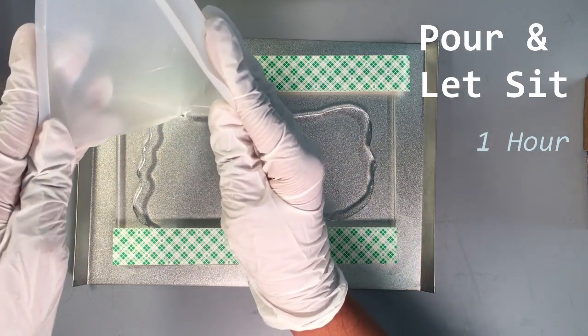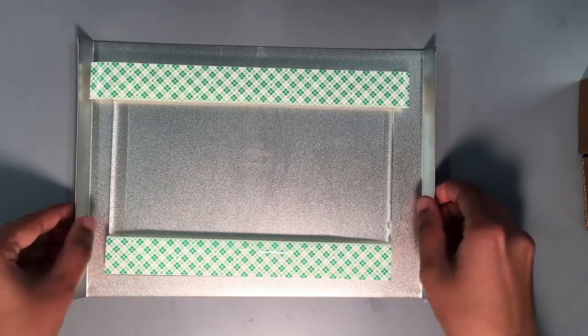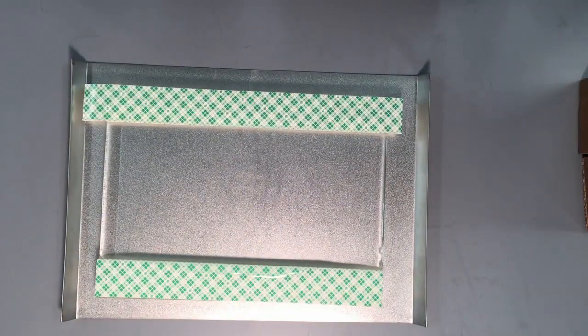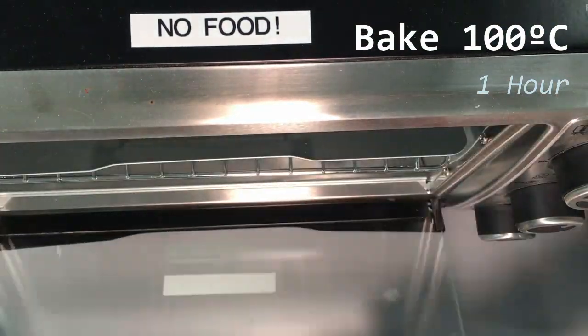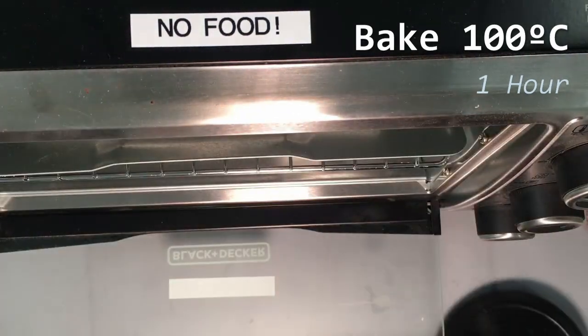Leave the mixture to sit for 1 hour. Preheat your oven to 100 degrees Celsius and place your tray inside. Cook the PDMS for 1 hour.